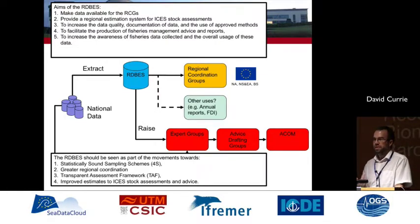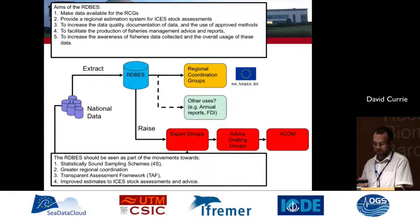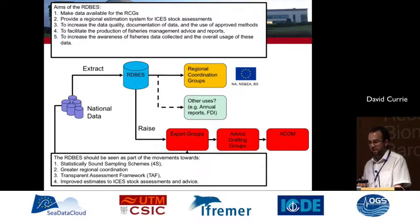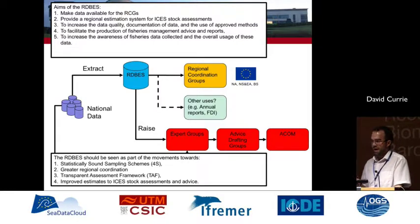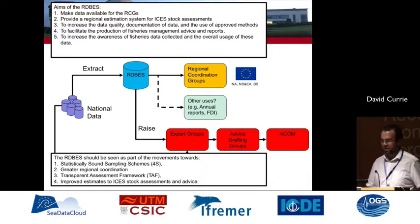This isn't something we thought up out of the blue. There have been a number of initiatives through ICES and the wider EU commercial fisheries moving towards this. First, statistically sound sampling schemes, often called 4S, to move towards more probabilistic sampling — the RDB-ES helps by allowing that to be documented. Greater regional coordination is high on the agenda for the EU. ICES's transparent assessment framework aims to be more transparent. Because this is personal data we can't be fully transparent, but we can increase transparency and improve estimates for stock assessments and advice.